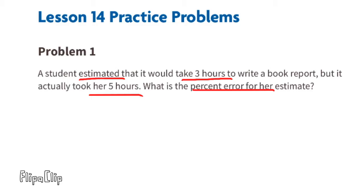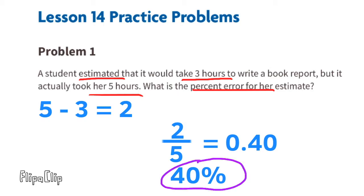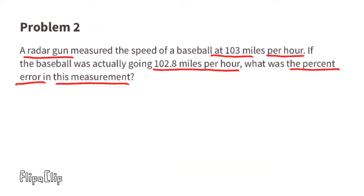Five hours minus three hours equals two hours. The two-hour difference divided by the five hours it actually took equals 0.40, which is 40 hundredths or 40 percent. The percent error for her estimate is 40 percent. Problem number two — a radar gun measured the speed of a baseball at 103 miles per hour.